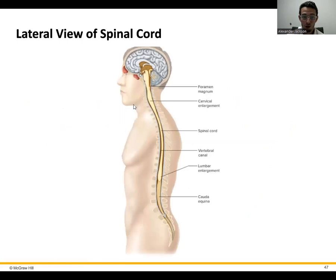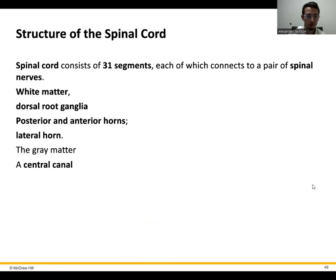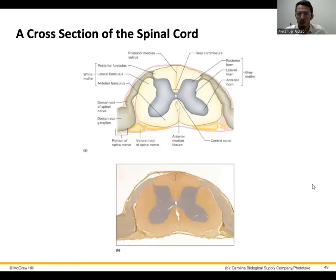Now let's talk about the spinal cord. It runs in your vertebral cavity, so it's protected by your vertebrae. You've got these little holes in your vertebrae — a foramen, or hole — and this is where the spinal cord will run. There are several structures of the spinal cord I want you to remember, and these are important both functionally as well as structurally.